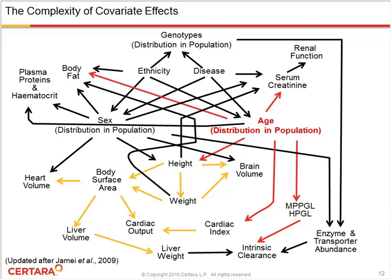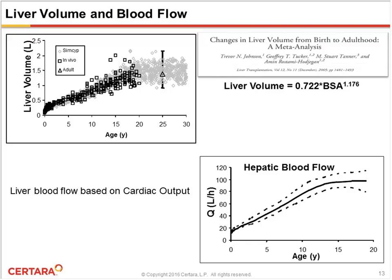Liver volume is defined as a function of body surface area, which in turn is linked to age, generating a relationship between liver volume and age. The simulated virtual relationship shown in gray diamonds correlates very nicely with observed data shown as black squares. Similarly, the PBPK model accounts for liver blood flow as a function of age by accounting for cardiac output and how it changes with age.